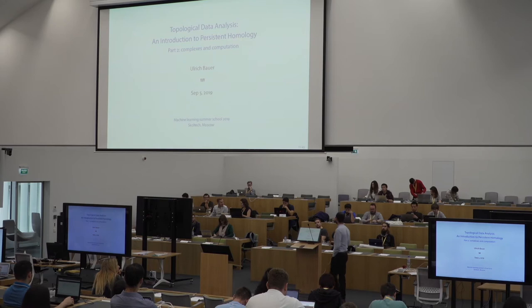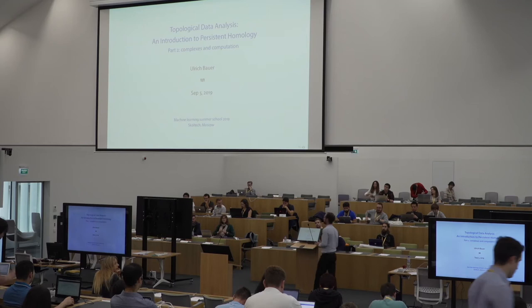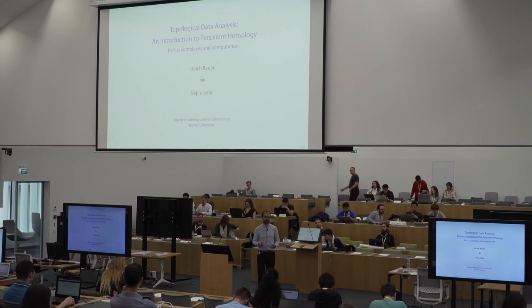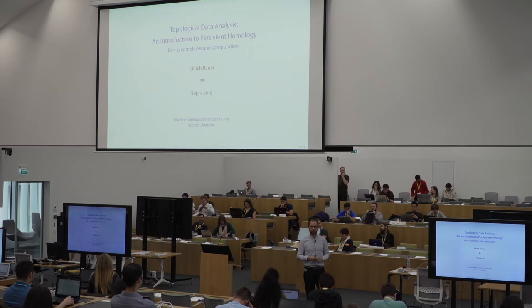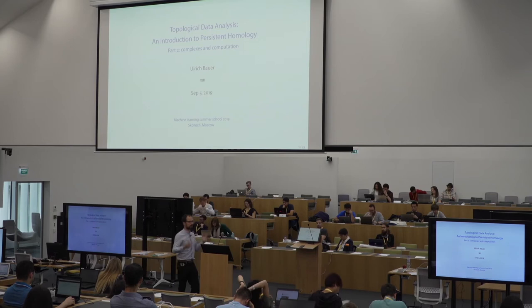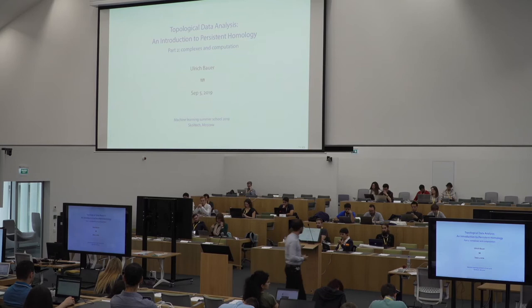Today we're going to look a lot into geometric constructions. You've seen these simplicial complexes overlaid on top of the union of balls. I'm going to start with explaining what exactly we saw there. At the very end of the lecture I mentioned a construction called the Vietoris-Rips complexes — a very simple construction that applies to general finite metric spaces and general distance matrices.